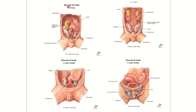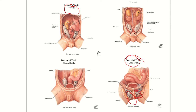Here we can see the pathway of the testis. This is the gonad — in the case of a male it will be converted into the testis. First it is present in the posterior abdominal wall, then it gradually starts to descend. The descent of the testis starts from week eight and gradually continues, and by the eighth or ninth lunar month it descends into the scrotum. In this baby, the descent of the testis is not completed.